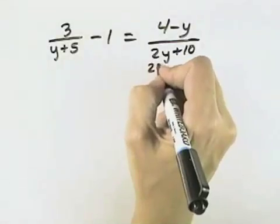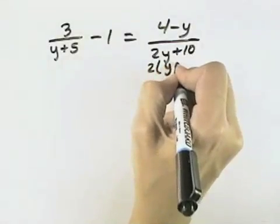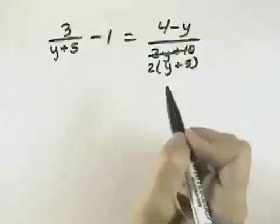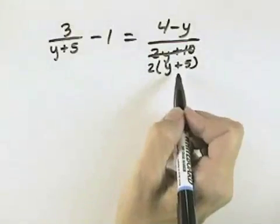This denominator on the right, we can actually factor out a 2 to see that it is 2 times y plus 5. That means our common denominator contains the factor of 2 and the factor of y plus 5.